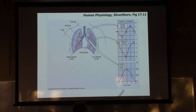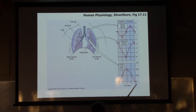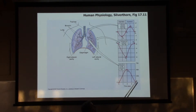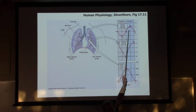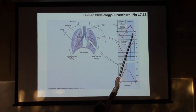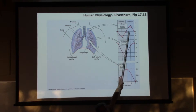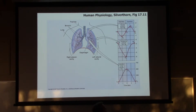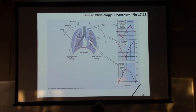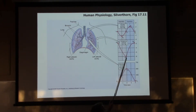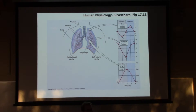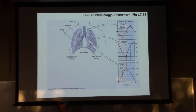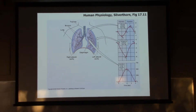So it's the blue part of the graph. We're exhaling, so the volume is decreasing. The pressure in the lungs is greater than atmospheric pressure - it's a positive value to push that air out. And the interpleural pressure is rising back up, increasing.